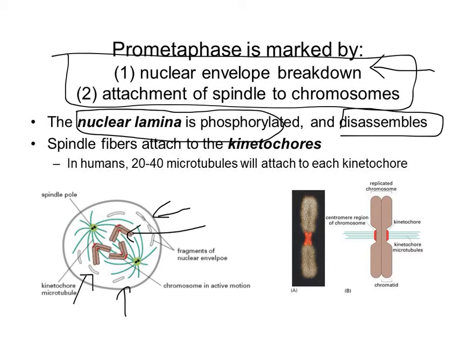In humans, we actually have 20 to 40 microtubules that need to attach to the kinetochores of each side of the condensed chromosome — so 20 to 40 microtubules that connect to the kinetochores of each sister chromatid. So the two main events in prometaphase are: nuclear envelope breakdown, and ultimately the microtubules starting to connect to chromosomes to help lead to the process of alignment, which happens in metaphase.